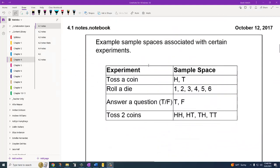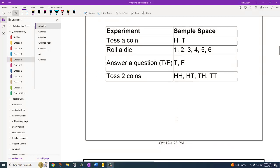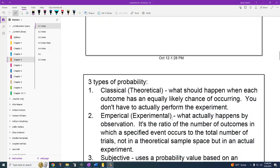Some examples of sample spaces. If you toss a coin, it's heads or tails. You roll a die, it's 1 through 6. If you answer a true-false question, guessing the answer could be true or false. And then tossing two coins, each coin could be heads or tails. So you start to get more options. If we rolled two dice, there's more options as we think about those.